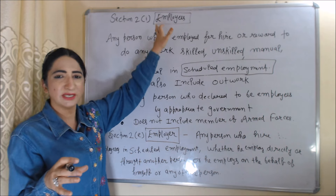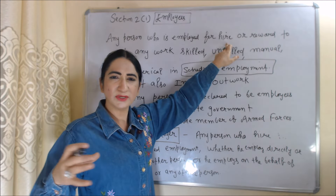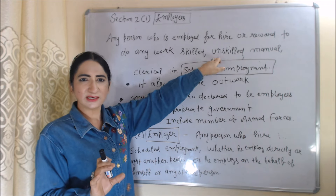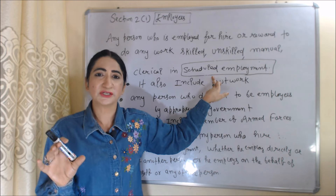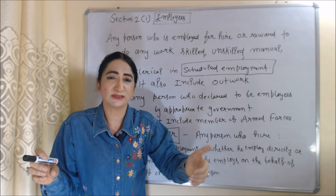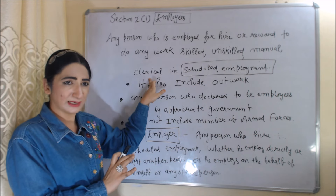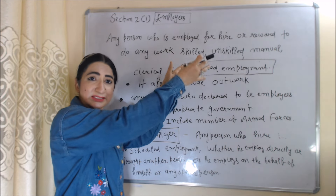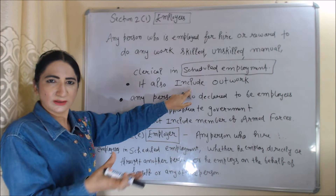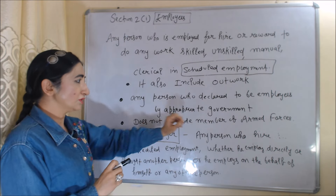The next definition is 'employee' according to Section 2(i). Any person who is employed for hire or reward — meaning he is expecting some wages in return, not working for free — to do any work, skilled, unskilled, manual, or clerical, in scheduled employment, will be called an employee. The definition also includes out-workers and any person declared as an employee by the appropriate government, but does not include members of the armed forces.